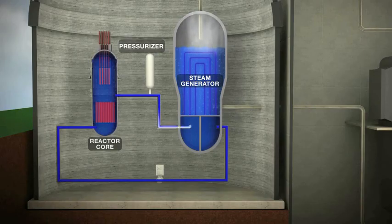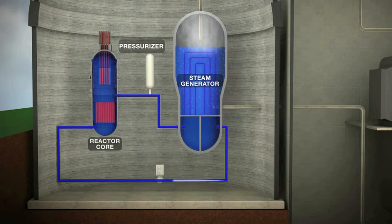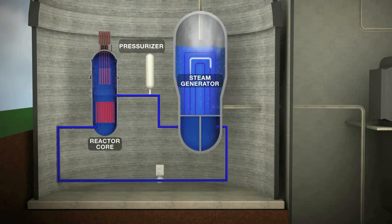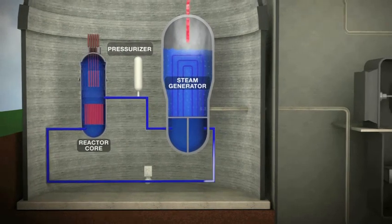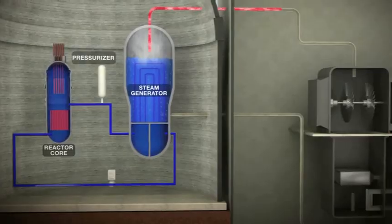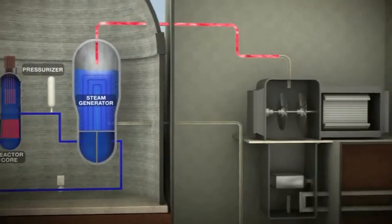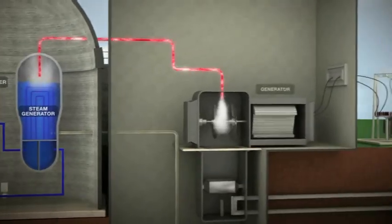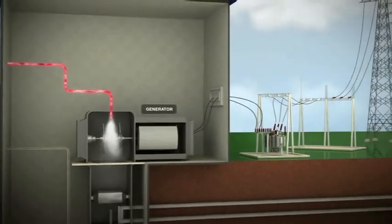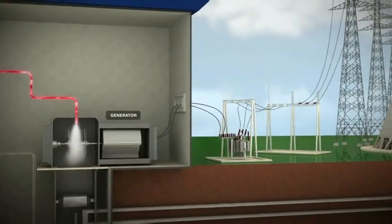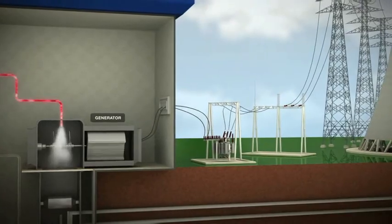After transferring its energy, the water is pumped back to the reactor vessel to be reused. The non-radioactive steam from the steam generator spins turbines that drive the generator to produce electricity.